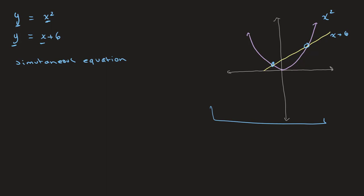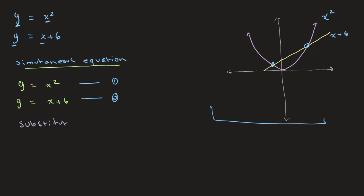This may seem very new but you should already be familiar with the concepts we're going over, because we solve these simultaneous equations in the same way we would solve any other simultaneous equations. So let's write out our equations: y is equal to x squared — equation 1 — and y is equal to x plus 6 — equation 2. The method I prefer to use is the substitution method, where we take some value of x or y and plug it into the other equation.